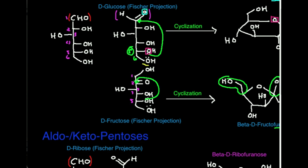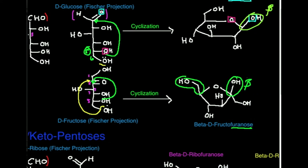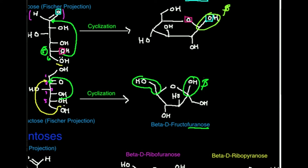If you had instead done the nucleophilic attack with the position six oxygen of fructose, you would get a six-membered ring. But for keto hexoses, the six-membered ring is less stable than the five-membered ring. This has to do with the fact that in the five-membered ring the extra hydroxymethyl group can hydrogen bond, making it more stable. When you have a six-membered ring from a keto hexose, this group no longer exists and there's less hydrogen bonding overall.